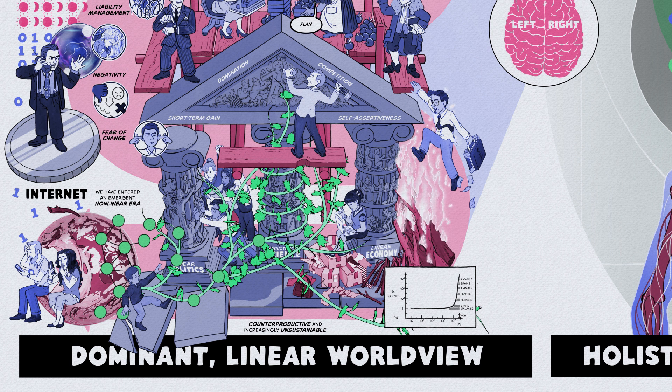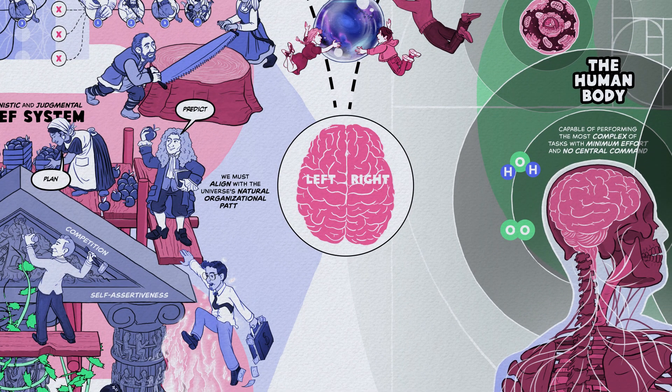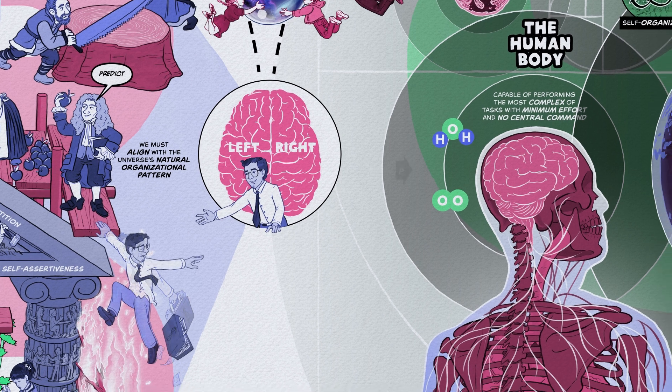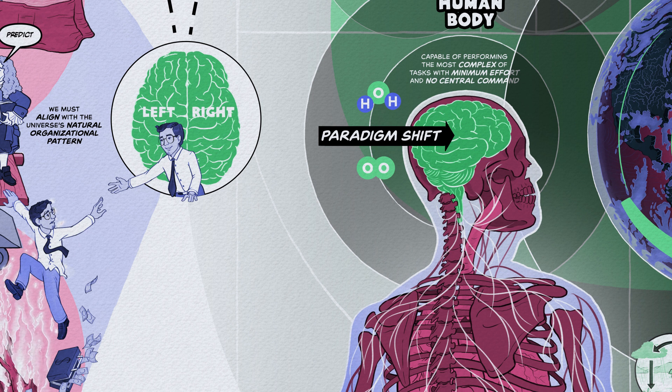To deal with challenges and pass through this emerging period successfully, we must align with the universe's natural organizational pattern, which requires a paradigm shift in our values, relationships, and thinking habits. This paradigm shift begins within the brain and its relationship with the whole body network.